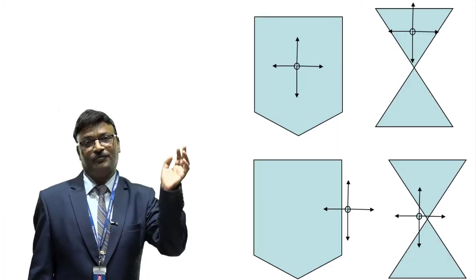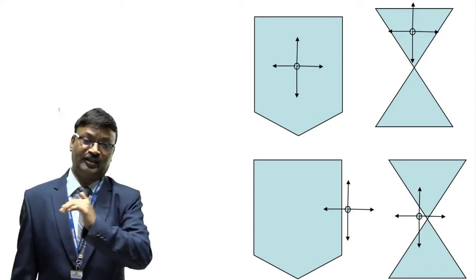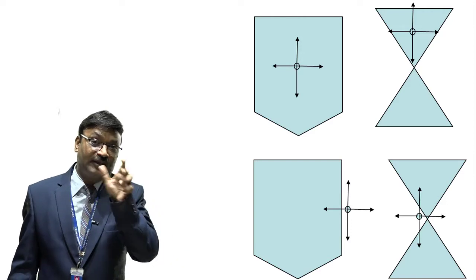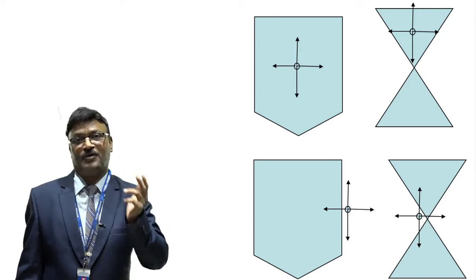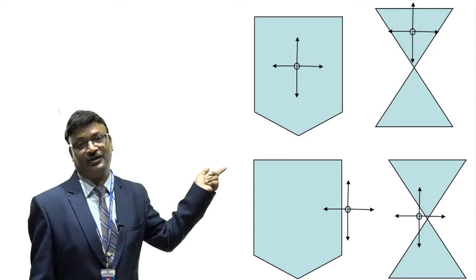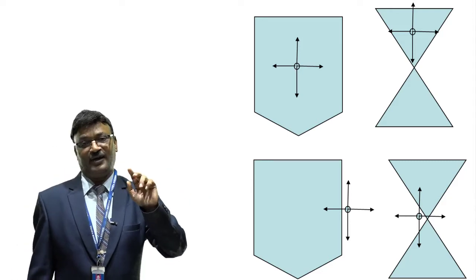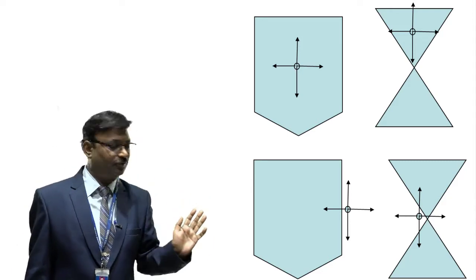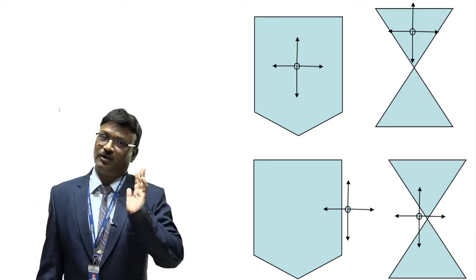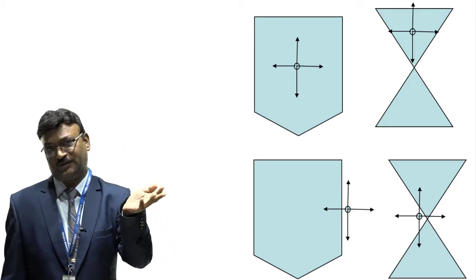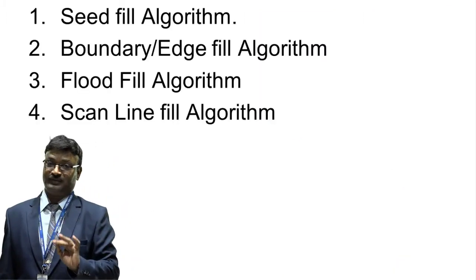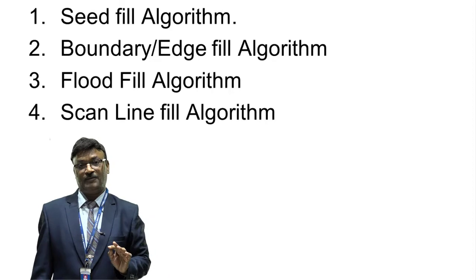For the winding number method, you check the x+1, x-1, y+1, and y-1 directions. If all four directions intersect an edge of the polygon, the point is inside. If only one edge intersects and the remaining three do not, the point is outside. For polygon filling, there are 3 to 4 methods: the seed fill algorithm, the boundary fill or edge fill algorithm, the flood fill algorithm, and the scan line fill algorithm.